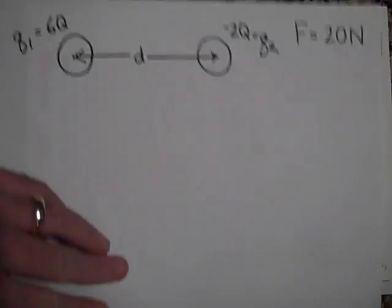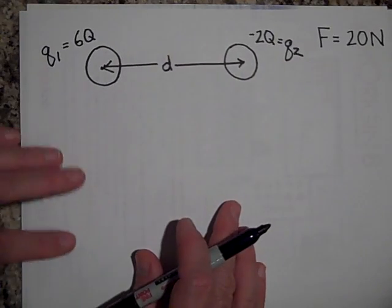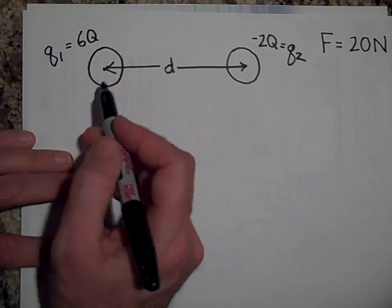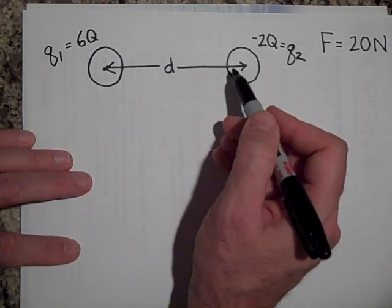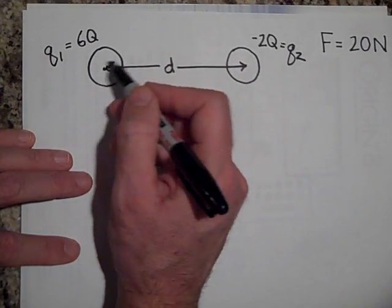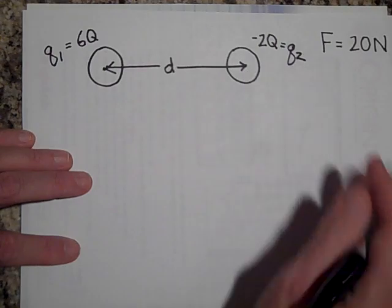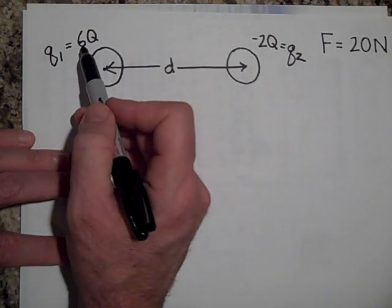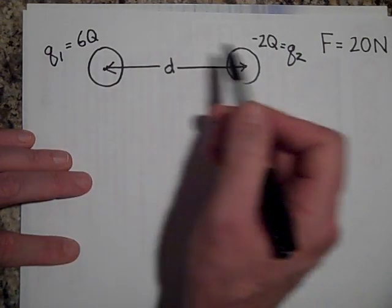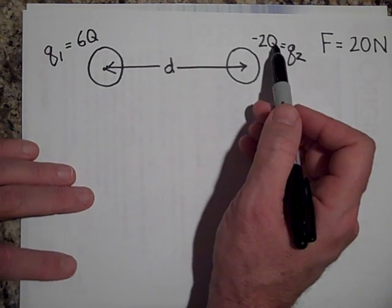All right, now here we have some charges. And these are metal spheres and they're identical in size. So this is a metal sphere and a metal sphere, they're identical in size. One has a charge of 6Q positive and this has a charge of negative 2Q.